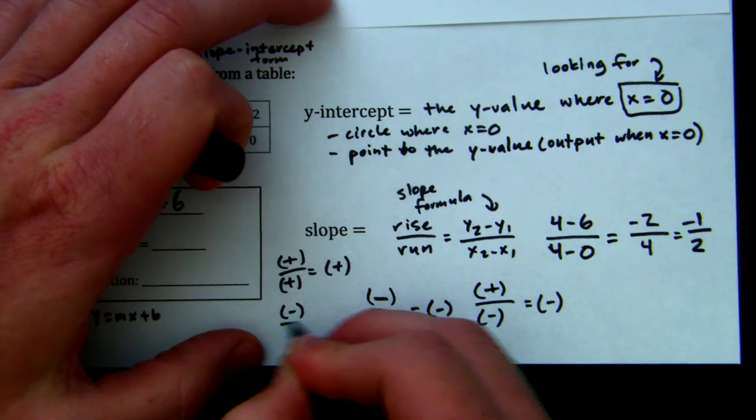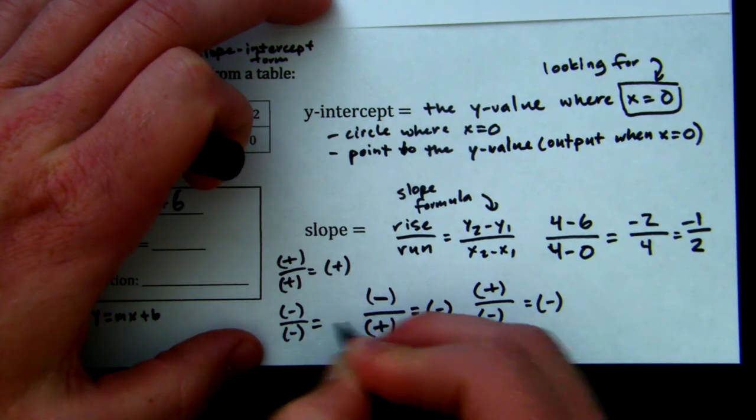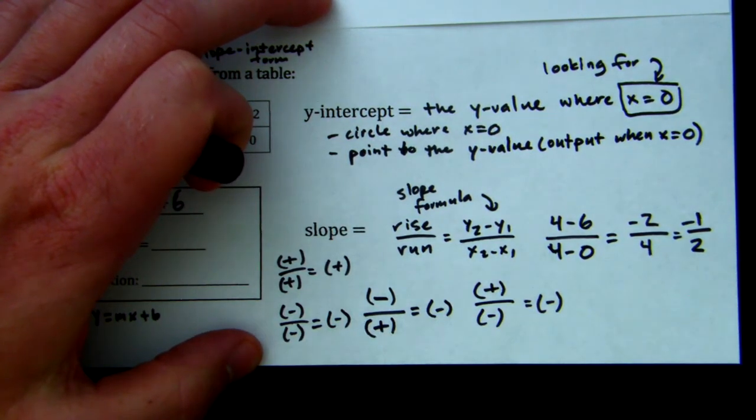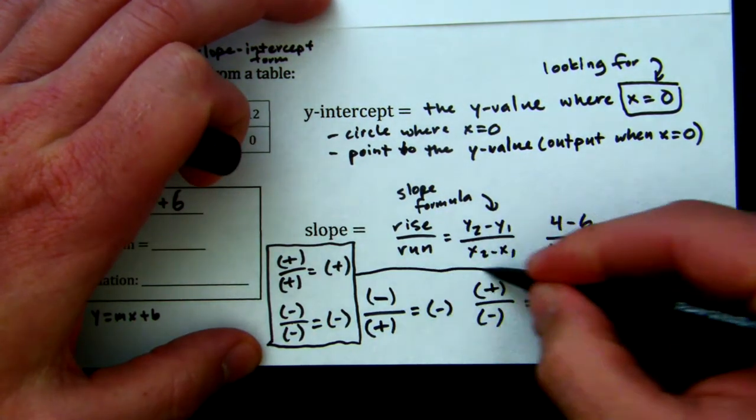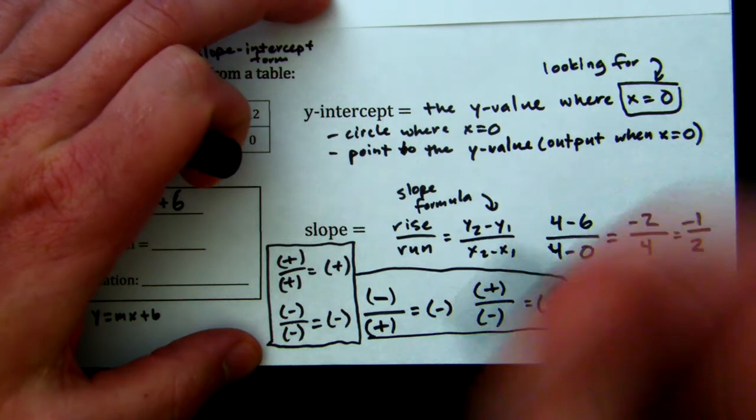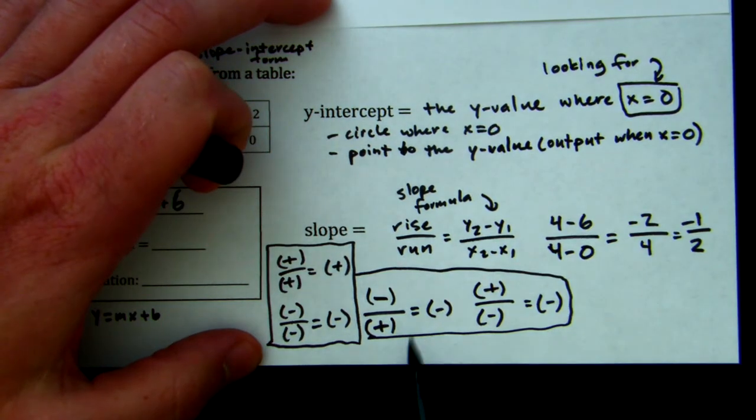If you have a positive number over a positive number, well, that one's pretty easy, that's a positive. If you have a negative over a negative, that is a positive slope. So there's two combinations to give you a positive slope and two combinations to give you a negative slope.